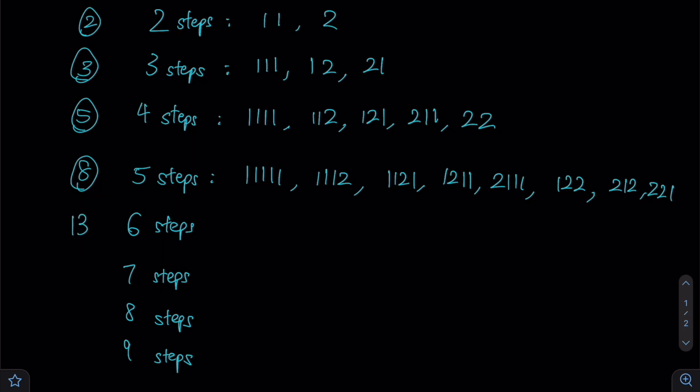So five plus eight should give us 13, 13 plus eight gives us 21, 21 plus 13 gives us 34. And lastly, to obtain the number of ways for nine steps, 21 plus 34 would give us 55.